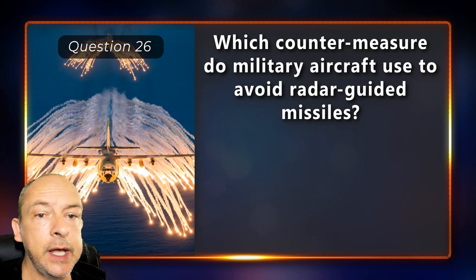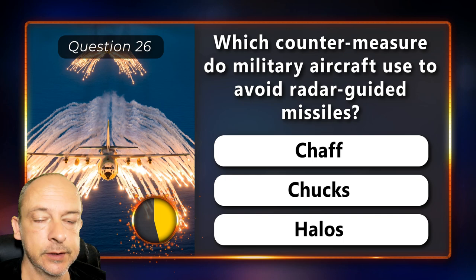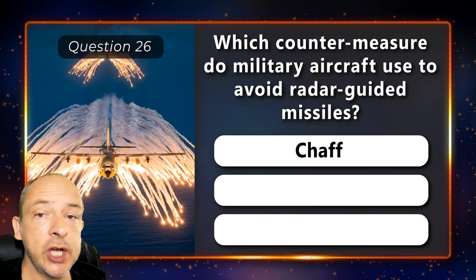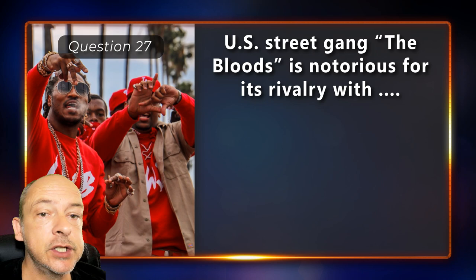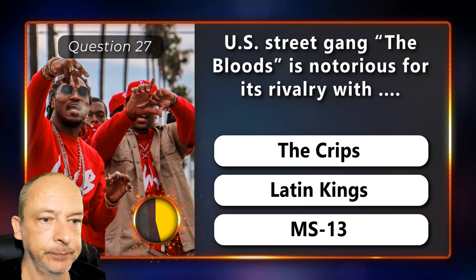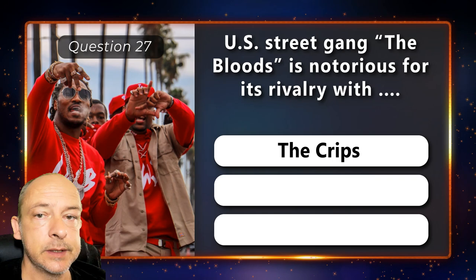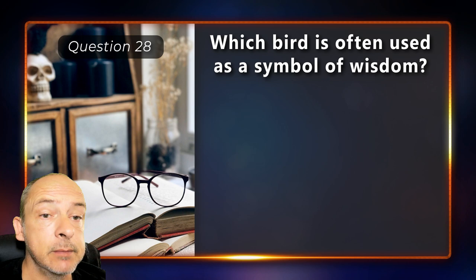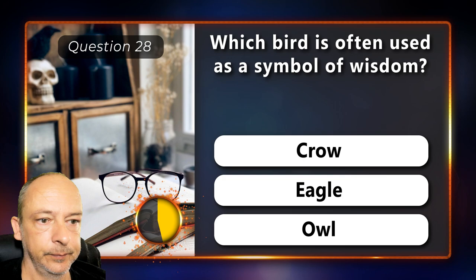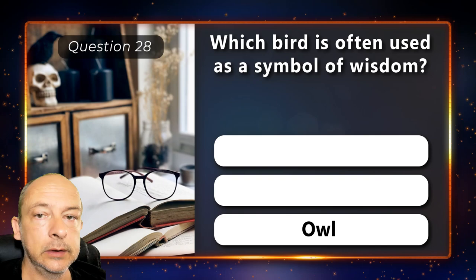Which countermeasures do military aircraft use to avoid radar-guided missiles — is it chaff, chucks or halos? It's called chaff. US street gang the Bloods is notorious for its rivalry with the Crips, Latin Kings or MS-13? The Crips. Which bird is often used as a symbol of wisdom — is it the crow, the eagle or the owl? The owl.